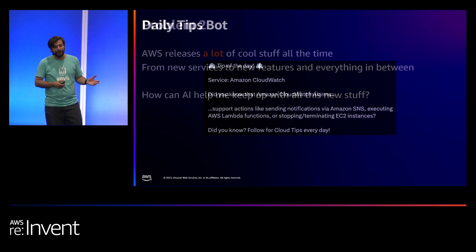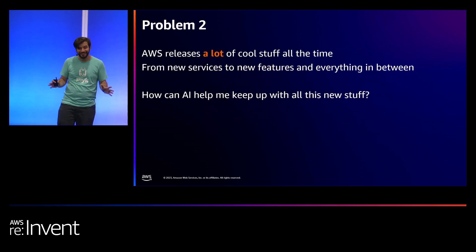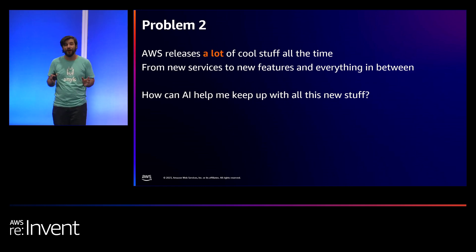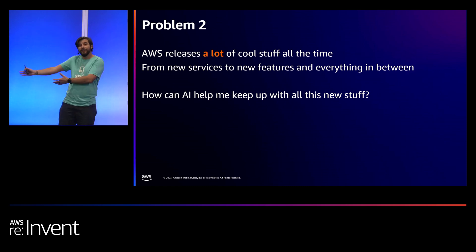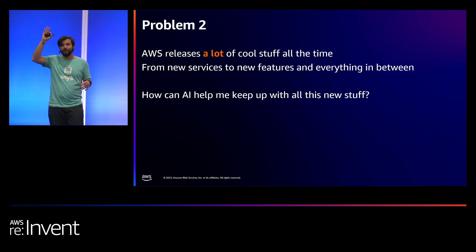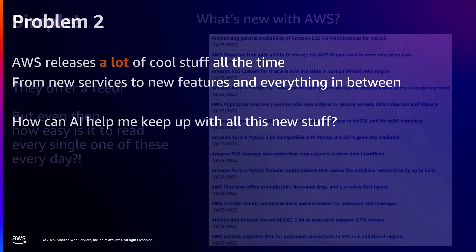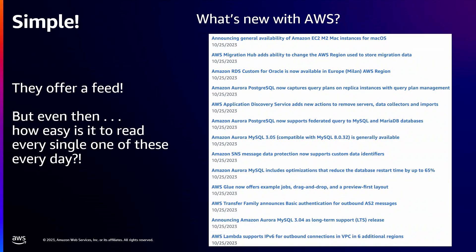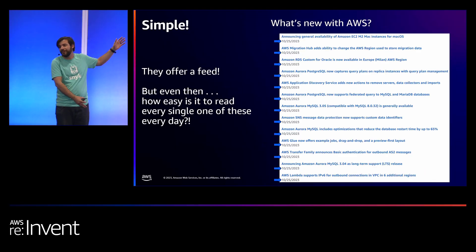That was problem number one. Another challenge — and especially if you're here this week, you know this — AWS releases a lot of stuff all the time, from new services to new features for existing services and everything in between. There is so much you need to learn about AWS all the time. Does anybody have a challenge keeping up with AWS releases? Have you heard about the What's New page on AWS? Look at this list of news articles — all those entries, exact same day, there are 12 here, and that's just because I couldn't fit everything in the slide. That was pre-re:Invent. Try going there right now — that would be hundreds, I'm sure.